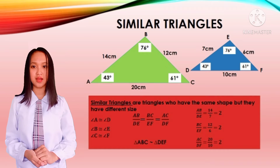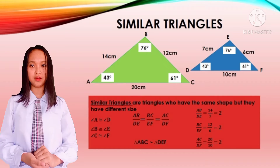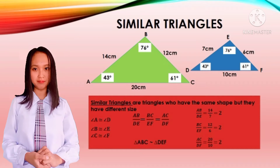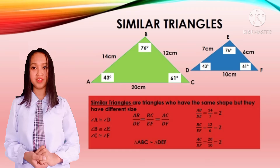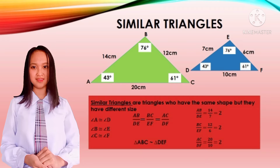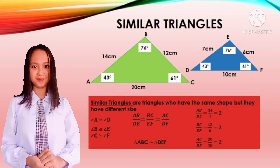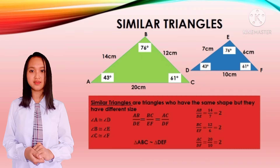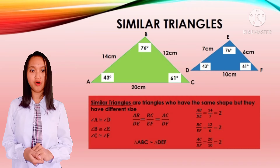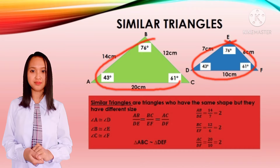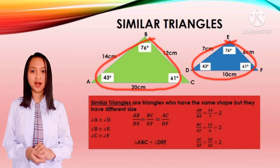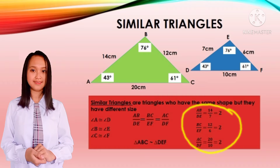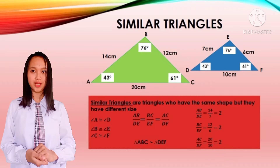Similar triangles are those triangles who have exactly the same shape but they have different sizes. We can say that these two triangles are similar if all of their corresponding angles are congruent and all the ratios of all matching sides are equal.